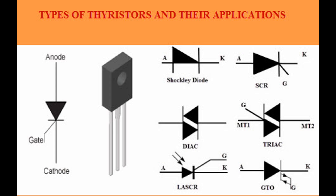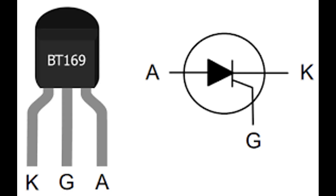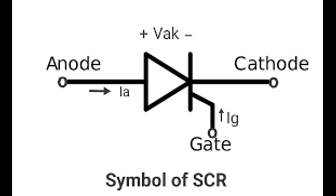Forward conducting mode: with the J2 junction now forward biased, the thyristor starts conducting and the anode current flows freely to the cathode. The thyristor remains in the conducting state even if the gate signal is removed, as long as the current through the device does not drop below the holding current. Turning off the thyristor: it can be turned off by reducing the anode current below the holding current, by interrupting the current flow in the circuit or applying a reverse voltage across the anode and cathode.